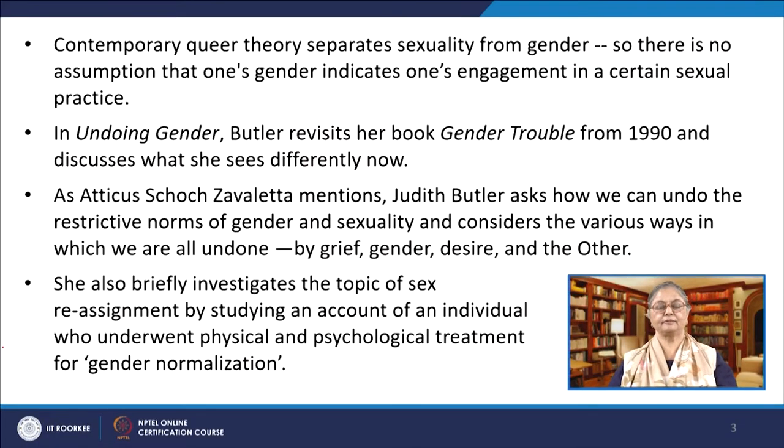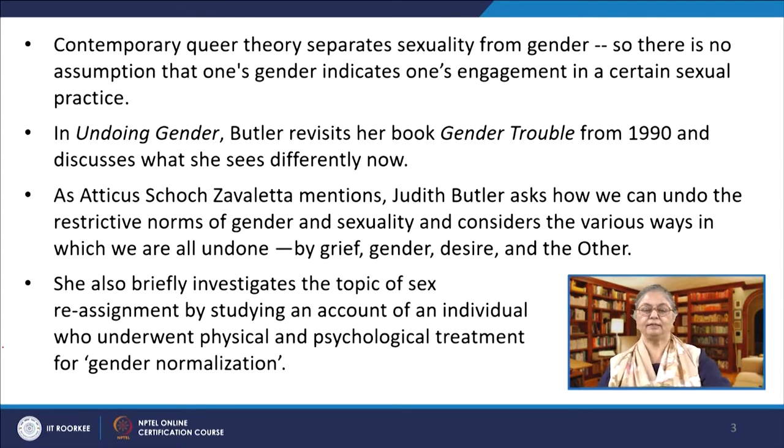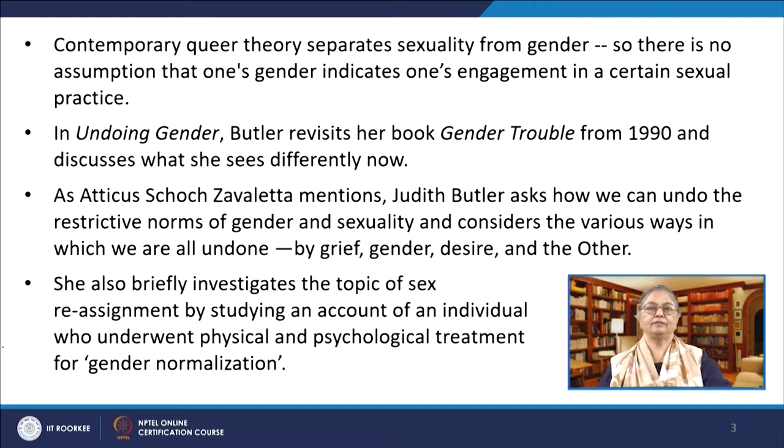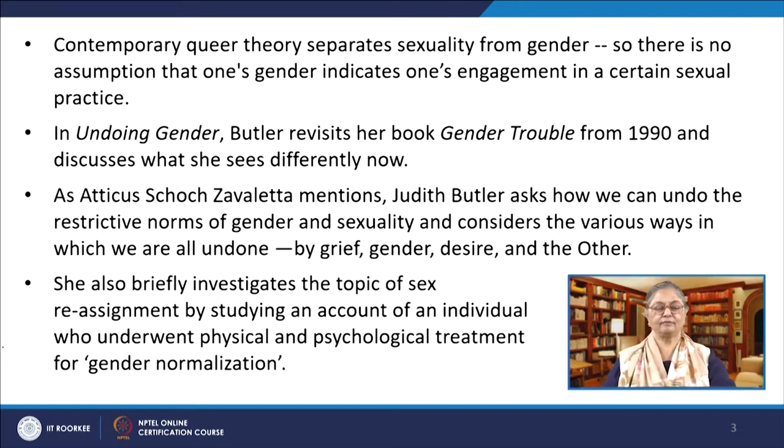She acknowledges the positive developments and also takes a critical stand against some of the advances in the context of gender. Throughout the book, Butler discusses some of the misguided attempts to regulate gender and how there are several forms of resistance to go beyond the binary gender categories of the past. Contemporary queer theory separates sexuality from gender, so there is no assumption that one's gender indicates one's engagement in a certain sexual practice. In Undoing Gender, Butler revisits her book Gender Trouble from the 1990s and discusses what she sees differently now.